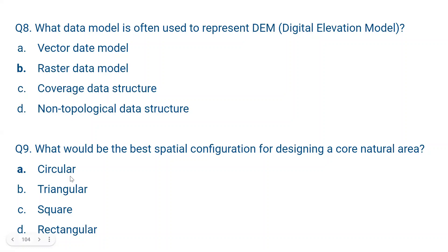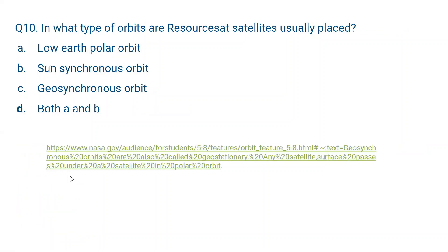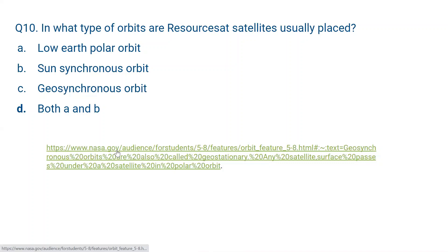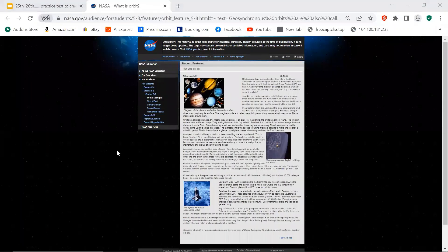The last question, number 10. In what type of orbits are ResourceSat satellites usually placed? ResourceSat satellites are placed in both low earth polar orbit and sun synchronous orbit. I will open a NASA website link to show you more about orbits and satellites, and I will provide this link in the description box.